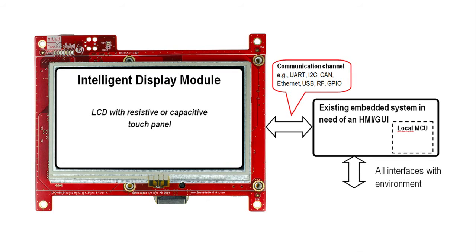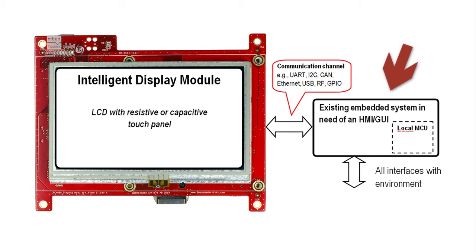There are two main usage scenarios, or use cases if you like, for the display module. The first is to add a graphical display module to an existing embedded system. Maybe the existing system has an old user interface that needs to be updated to a more modern look and feel, but the system shouldn't be changed or redesigned too much. In this scenario, the display module acts like a graphical terminal, while the existing embedded system still performs the control functions. The graphical terminal receives high-level commands and data that are presented on the display. This is easy to accomplish with our intelligent display modules.